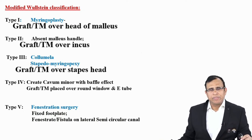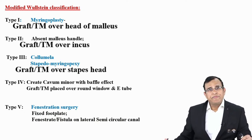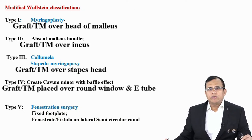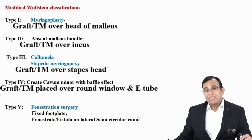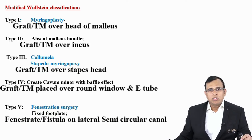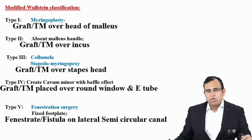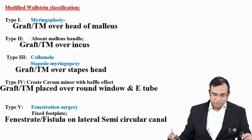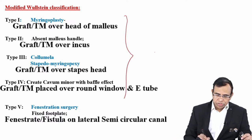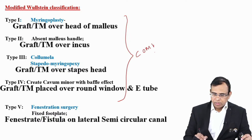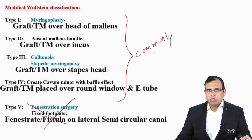In Type 4 we place the graft over the round window and the Eustachian tube. Type 5 is very different — in this we create a fenestra or fistula on the lateral semicircular canal. This is also a commonly asked type. The first four types are still commonly performed, but Type 5 is not done nowadays.